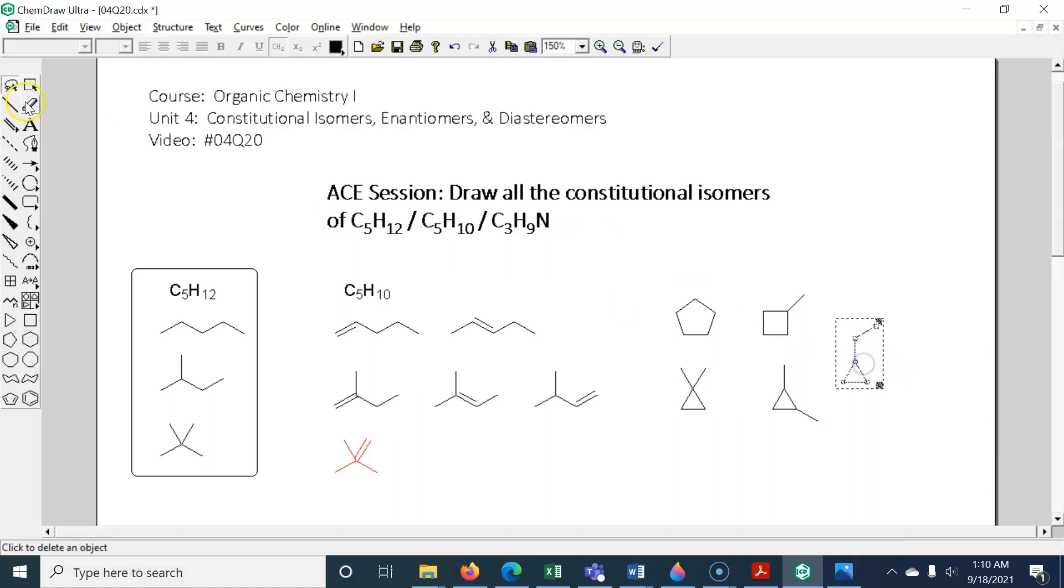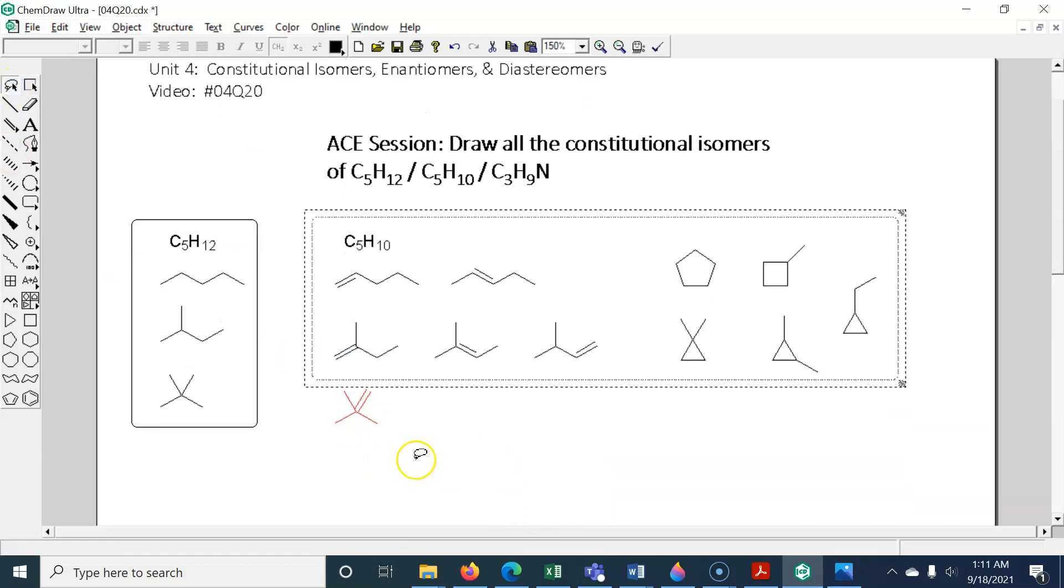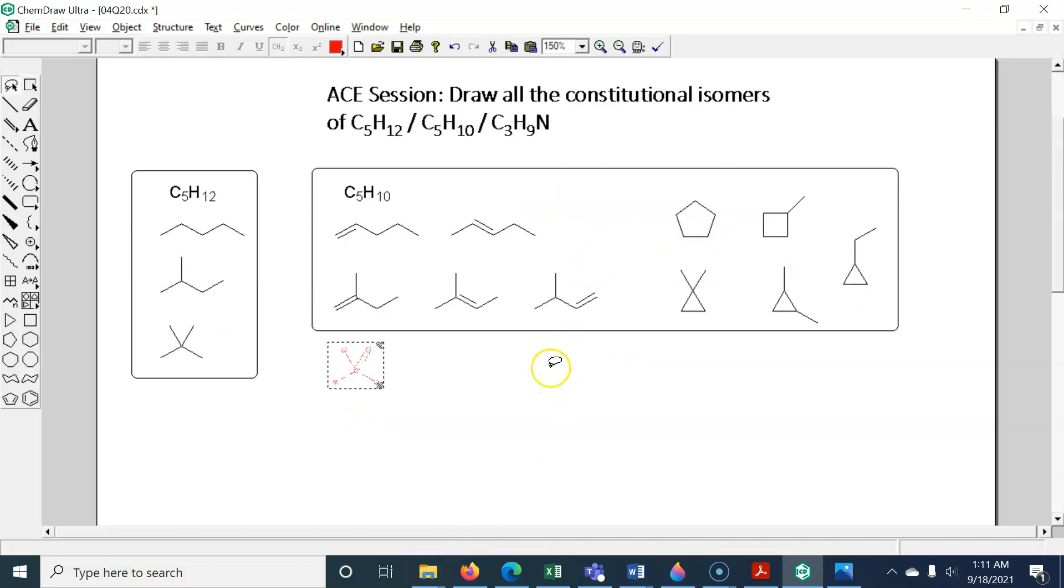Let me put a box around those. We have five acyclic and five cyclic. I believe that's all of them. And again, this one was a test. But we noticed that it failed. So it's in red. Last one. C3H9N. Okay.